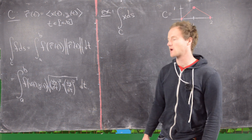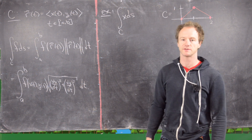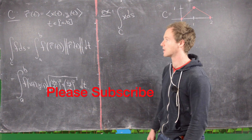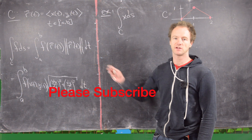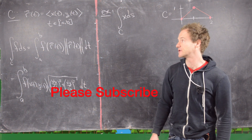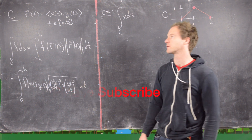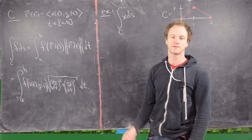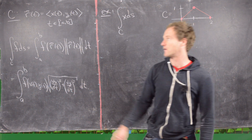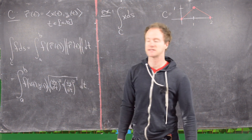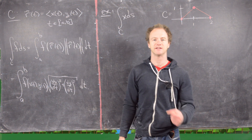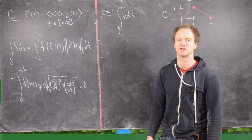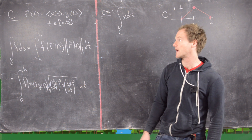In this video we're going to look at a couple more examples of line integrals with respect to arc length. So let's recall the definition or the formula real quick. If we've got a vector version of a curve, r of t equals x(t), y(t), so in other words those can be parametric equations x and y,